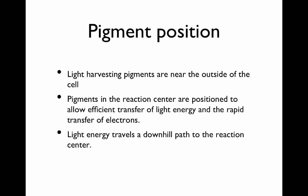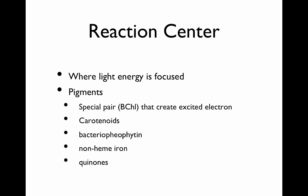Light harvesting pigments are orientated near the outside of the cell, allowing them to collect light from outside and focus those photons on the reaction center. The reaction center is positioned to allow efficient transfer of light energy and rapid transfer of electrons. Light energy travels down downhill paths to the reaction center — the outer light harvesting complexes absorb higher energy light that is transferred to the inner complexes and then to the reaction center.